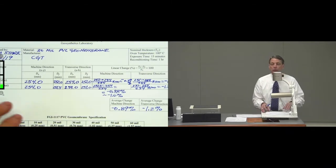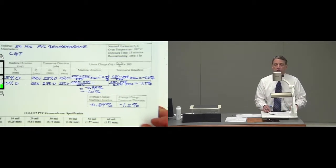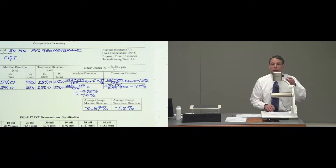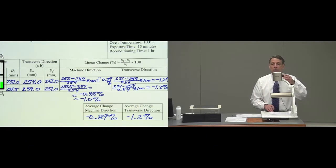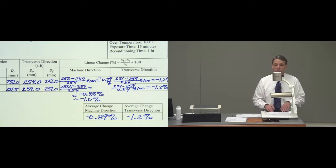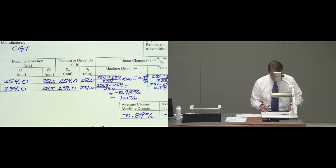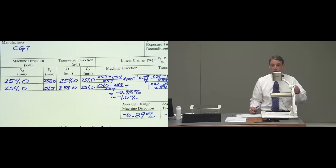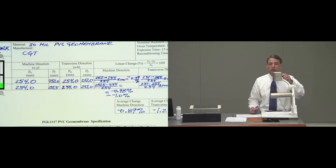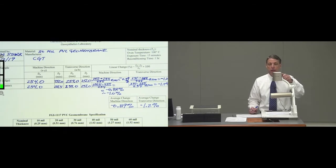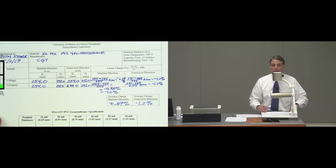So that would be the end result. It's the average of the machine direction and the transverse direction 0.89 and 1.2. So the specified values for this geomembrane which is a 30 mil PVC geomembrane is shown down at the bottom of the data sheet.